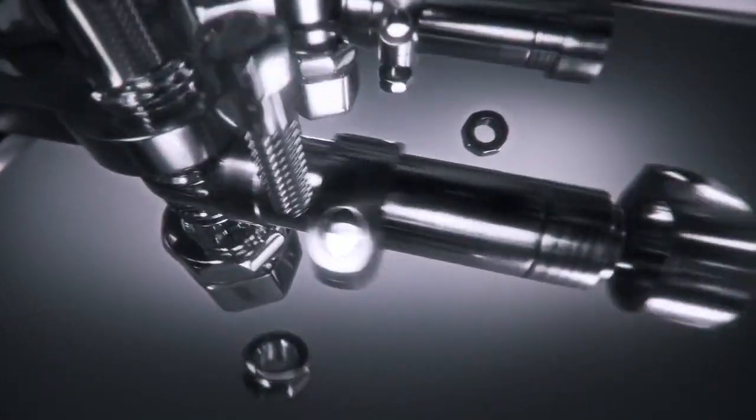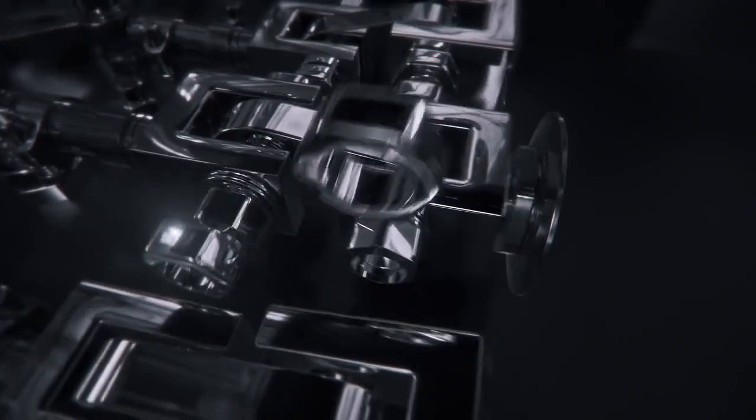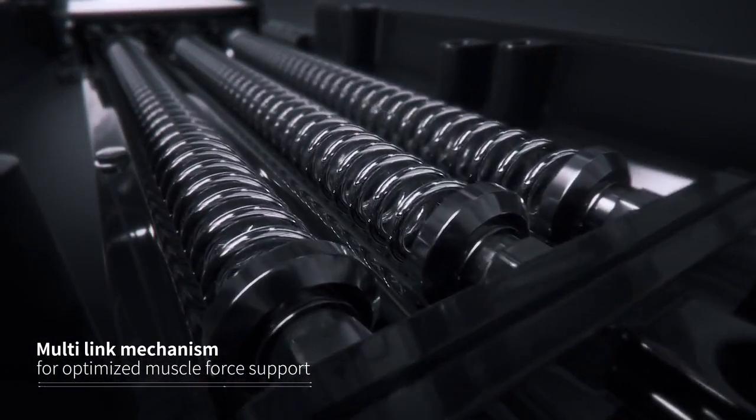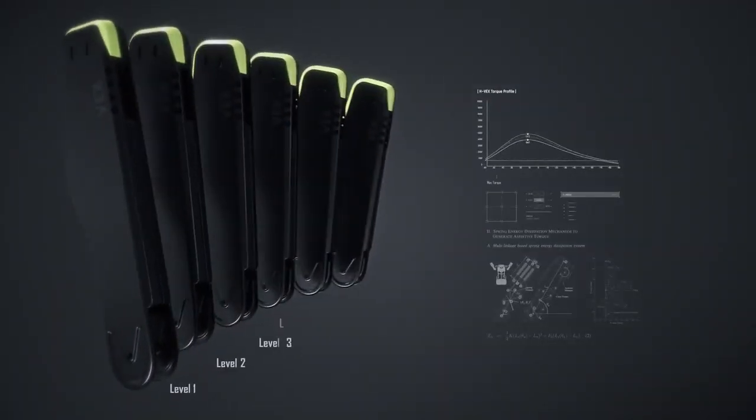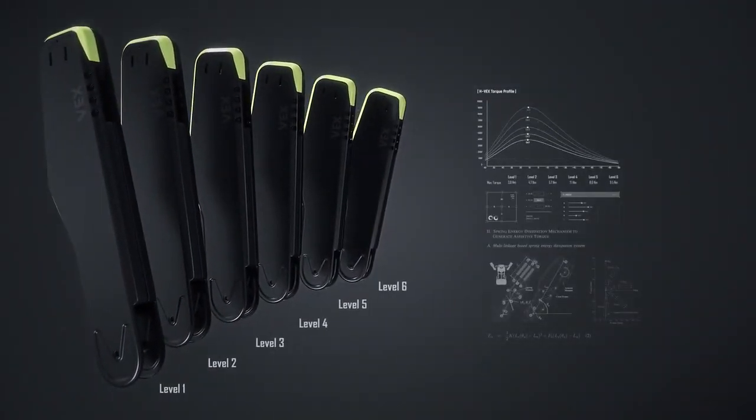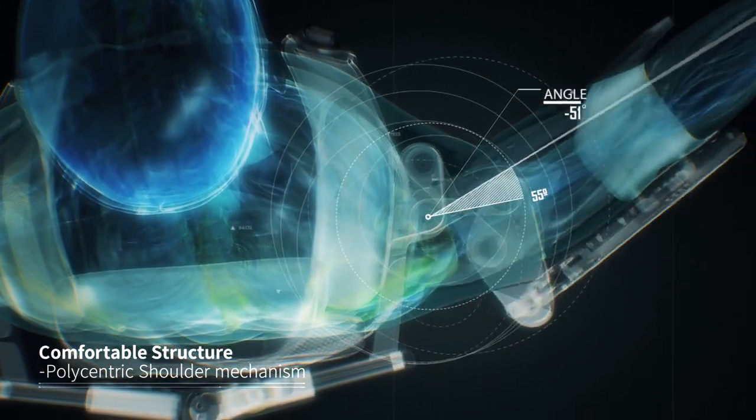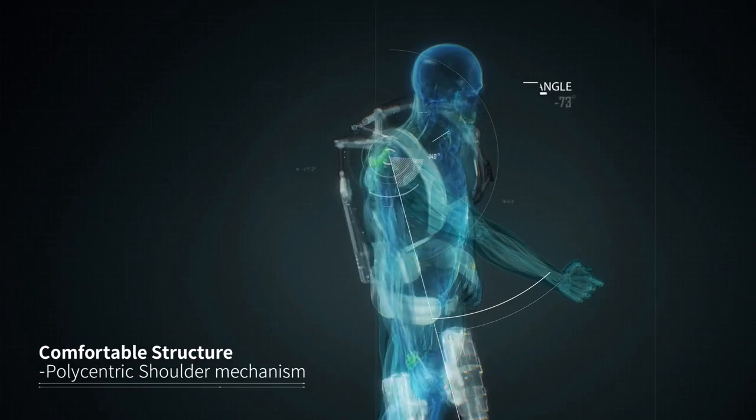Vex's four-bar-based mechanism mimics the movement of the human shoulder system, and the multi-linkage mechanism applied to Vex's upper arm provides six assist levels of choices according to various working environments, while allowing the same range of motion as human shoulder joints.